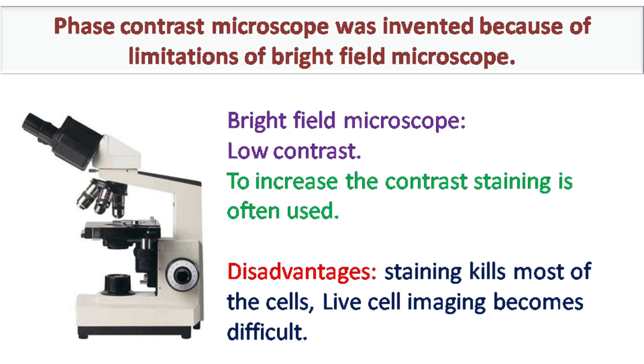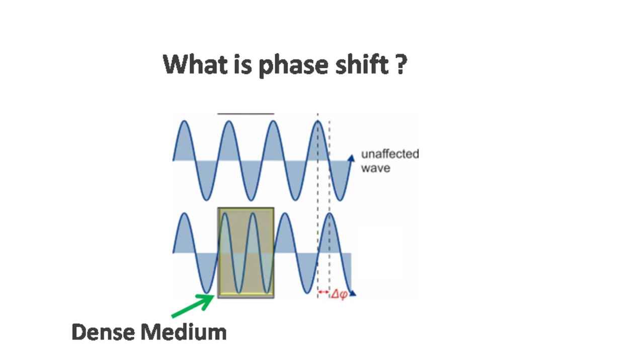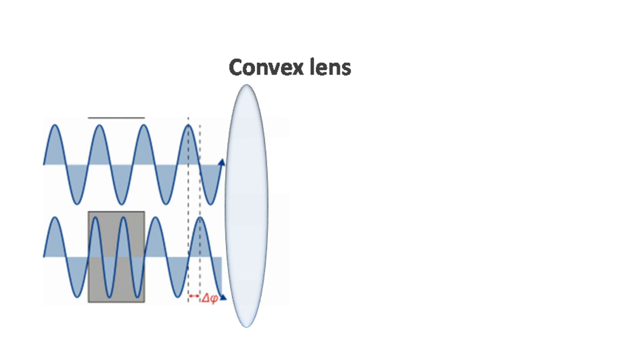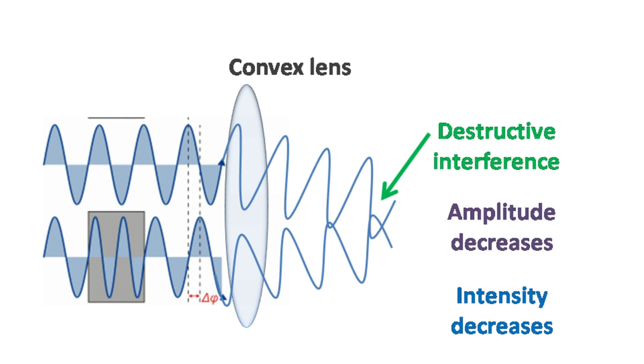Let's see what it means by phase shift. When light travels through dense medium, its velocity decreases. Besides velocity decrease, there is also a shift in the phase. If these two waves meet at a point, there will be destructive interference as a result of which the amplitude decreases. The decrease in amplitude in turn decreases the intensity.